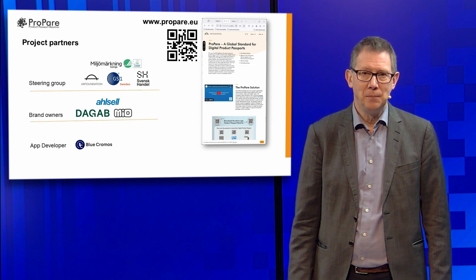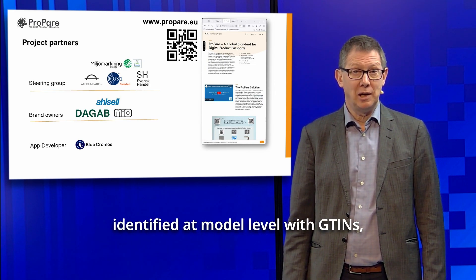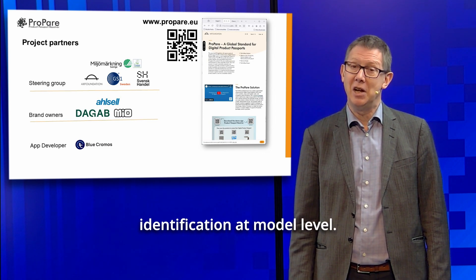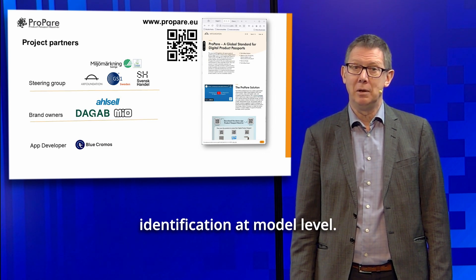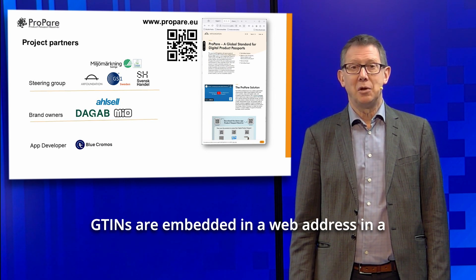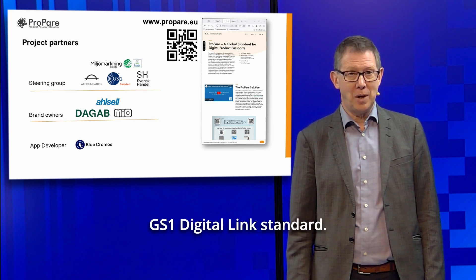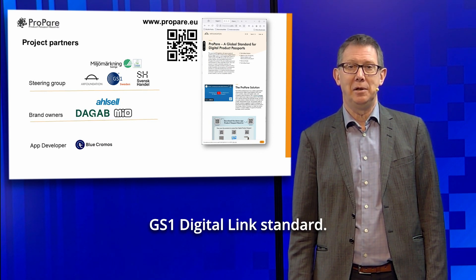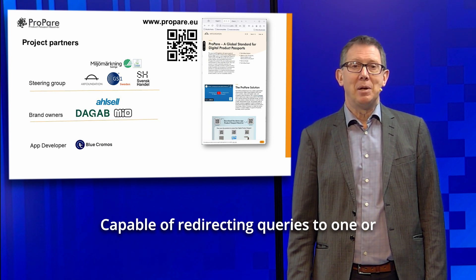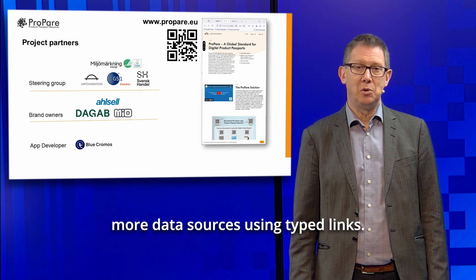The products used in the demo are identified at model level with GTINs, which is the GS1 standard for product identification. GTIN, or Global Trade Item Number, GTINs are embedded in a web address in a QR code according to the GS1 Digital Link standard. This web address leads to a resolver capable of redirecting queries to one or more data sources using typed links.